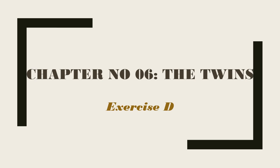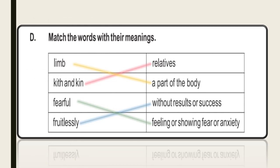Now we shall do chapter number 6, The Twins, exercise D. Exercise D is: match the words with their meanings. The first word is limp, which means a part of the body. Kith and kin, which means relatives. Fearful, which means feeling or showing fear or anxiety. Fruitlessly, without results or success.